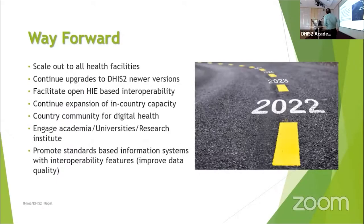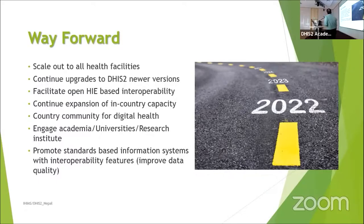Our way forward includes scaling out to 100% online health facility reporting in DHIS2, continuing to upgrade DHIS2 for the new version, facilitating open HIE-based interoperability, continuing expansion of in-country digital health capacity and community, engaging academia and research institutes, promoting standards-based information systems with interoperability features, and improving data quality — all guided by our approved HMIS Roadmap 2022–2030.